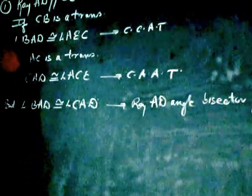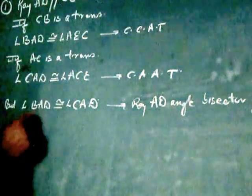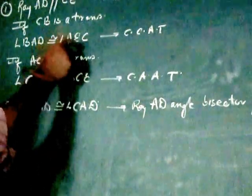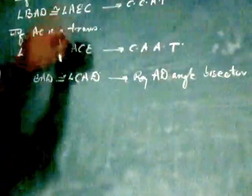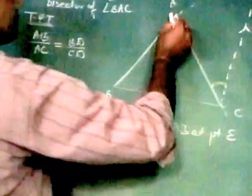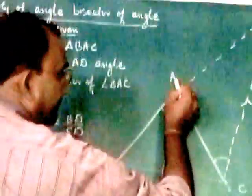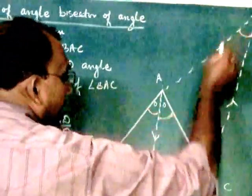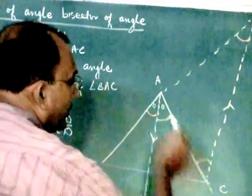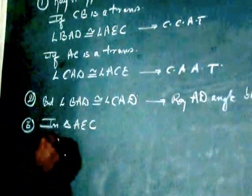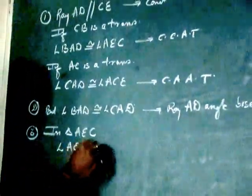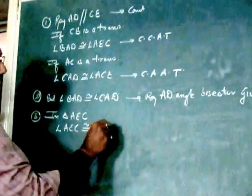If we concentrate on statement 1 and 2, LHS is BAD and CAD. But BAD and CAD are congruent to each other, therefore our RHS should be congruent to each other. Point number 3: These two RHS are nothing but angles of triangle AEC. In triangle AEC I get this angle, angle AEC congruent to angle ACE. So I can write: In triangle AEC, angle AEC is congruent to angle CAD.